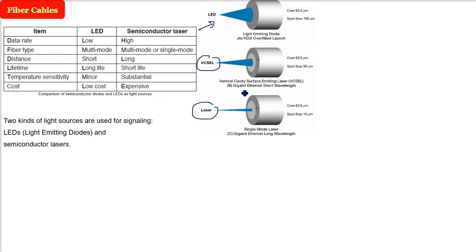Here you see VCSEL, vertical cavity surface emitting laser. This is for gigabit ethernet short wavelength. And the above one, you see the light emitting diode. We have also showed the core and the spot size, just to have an idea.